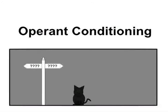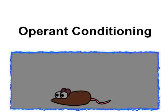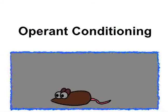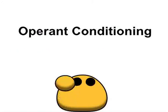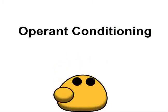Let's get going with operant conditioning. Now Thorndike locked cats in maze-type boxes, Skinner locked rats in electrified boxes, and we are going to lock our yellow blob in a cardboard box.